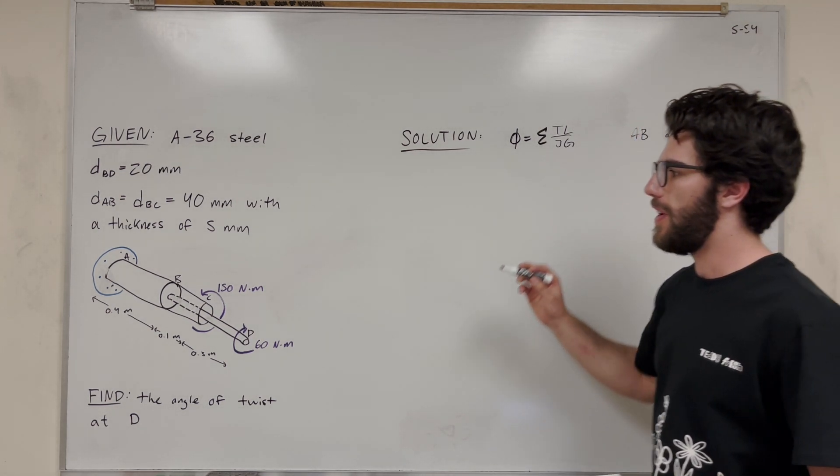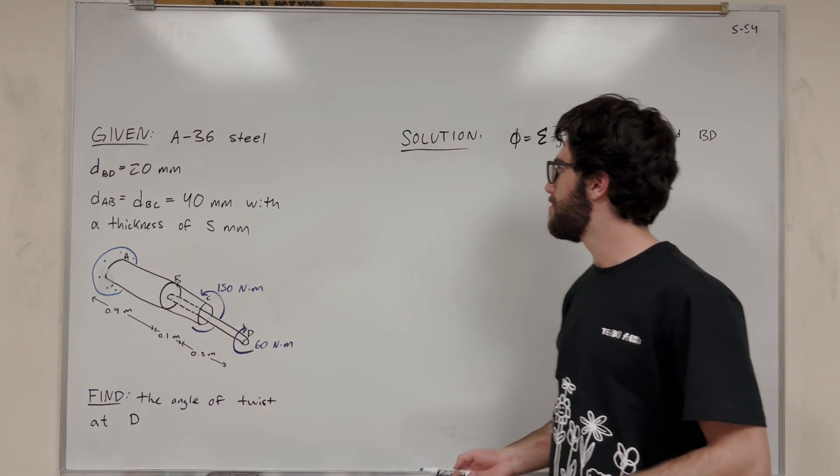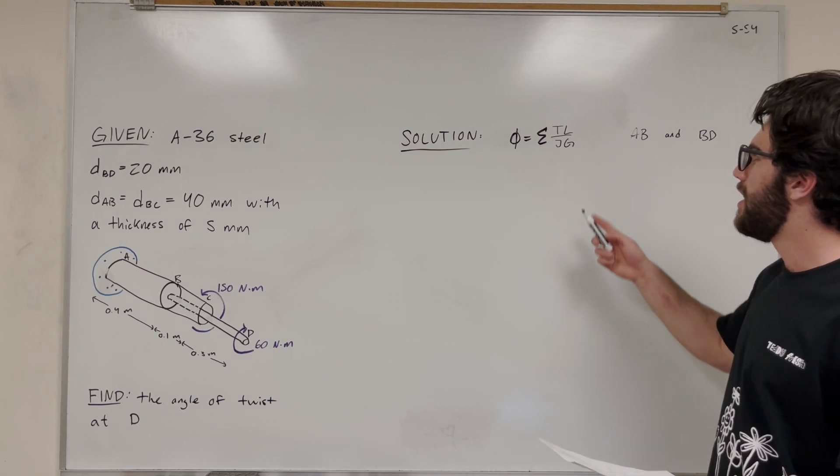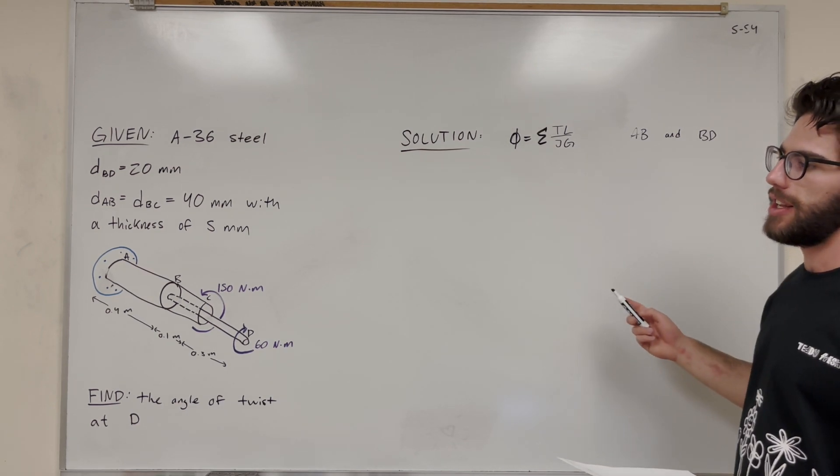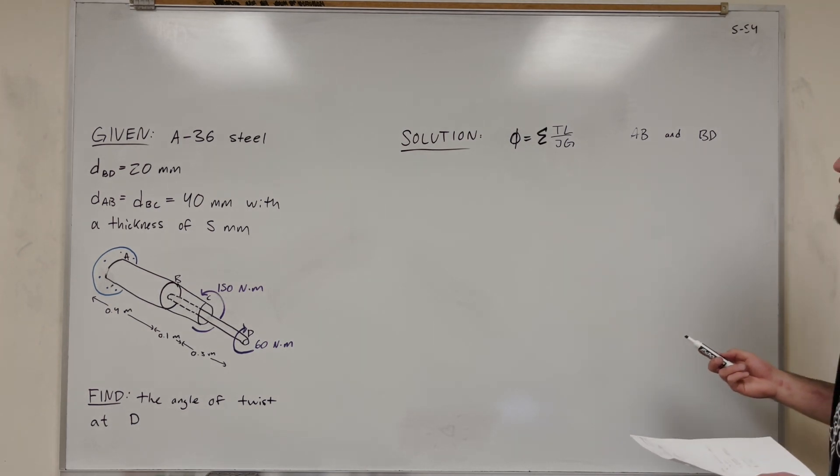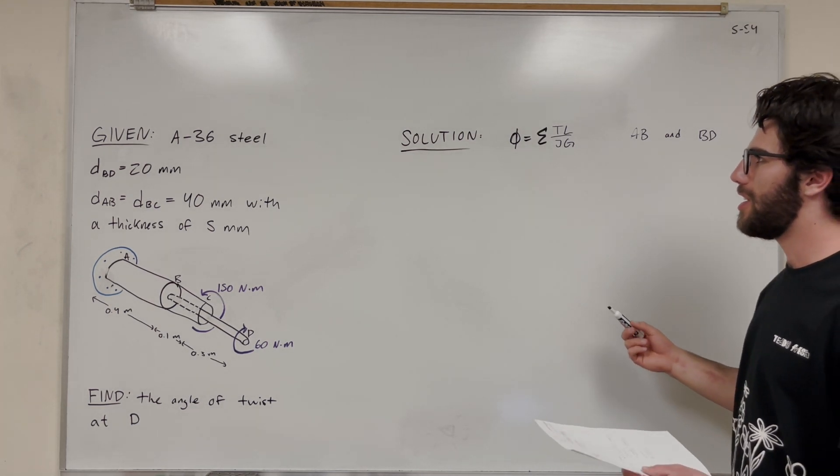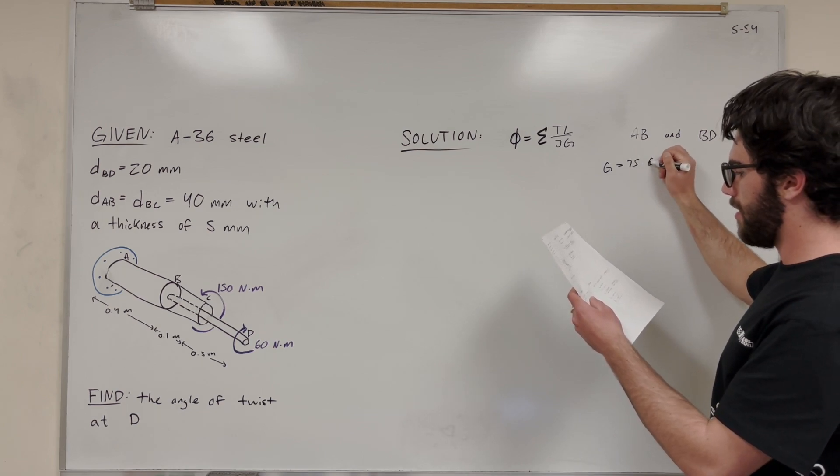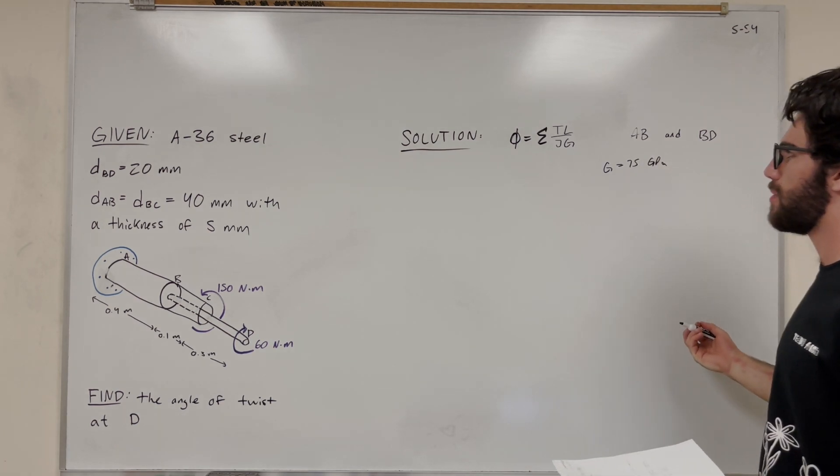So L is the length. That's really easy to find. Each one is 0.4 meters long. J is the polar moment of inertia. We're going to need to calculate that. And then G is the modulus of rigidity. That's a constant. We can go ahead and write that down. I'm pretty sure it's 75 GPa. So that's one thing we know.